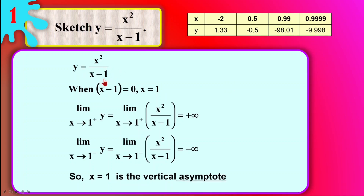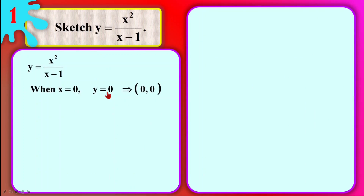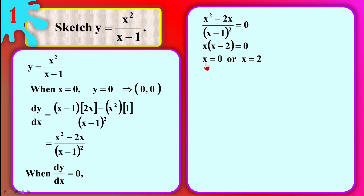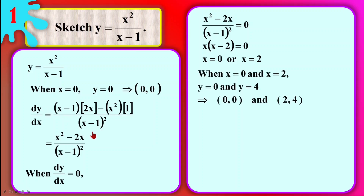Next, we need to find all the coordinates: the intersection points with the x-axis and y-axis, and the maximum, minimum, or inflection points. So we do dy/dx, which means we differentiate. We set dy/dx equal to zero to calculate our coordinates. From this we'll have two values of x. This is called the stationary point method — we calculate the stationary point when dy/dx equals zero. We need coordinates to sketch our graph.